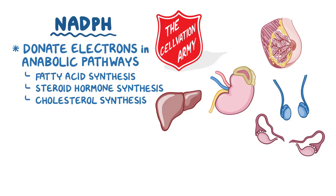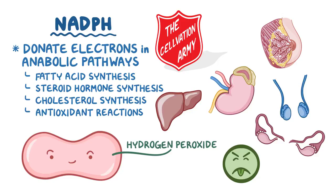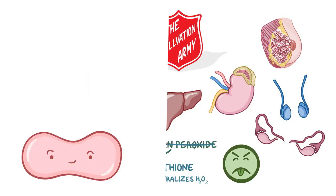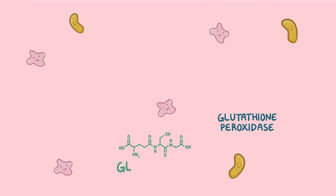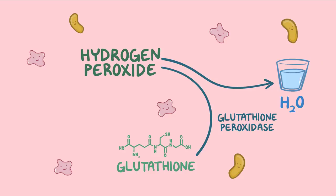In addition to anabolic pathways, NADPH is also a key player for antioxidant reactions. For example, red blood cells normally produce reactive oxygen species like hydrogen peroxide as a byproduct of oxygen metabolism. Hydrogen peroxide can be harmful, so red blood cells also produce antioxidants like glutathione, which can neutralize hydrogen peroxide. In the presence of an enzyme called glutathione peroxidase, glutathione donates electrons to hydrogen peroxide, converting it to water, which is harmless.